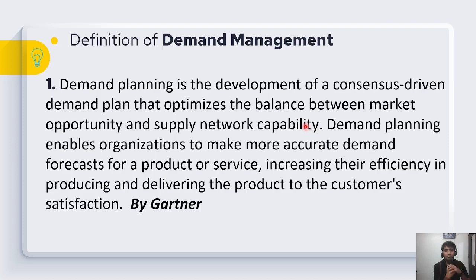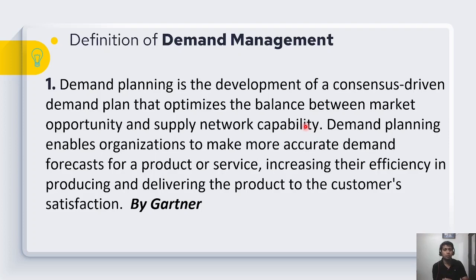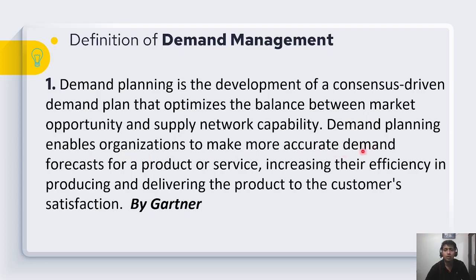In the second example, supply is very high but market demand is very low. In such cases, the demand planning team needs to see how they can use that supply — perhaps by maximizing sales through discounts, reducing production, or converting one product to another similar product to create sales opportunities. This is basically the balancing of two opportunities: market opportunity and supply opportunity.